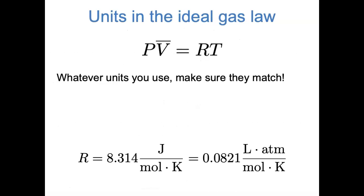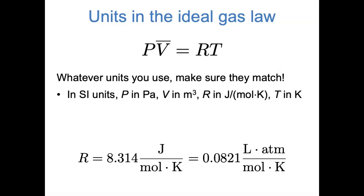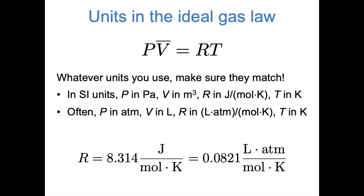Using the ideal gas law often comes down to plugging in numbers, but it's important to keep track of units. The units of R give you a hint. R equals 8.314 joules per mole Kelvin for SI units — pressure in pascals, volume in cubic meters, temperature in Kelvin. Alternatively, using R equals 0.0821 liter atmospheres per mole Kelvin means pressure in atmospheres, volume in liters, and temperature in Kelvin. Make sure your units match throughout.